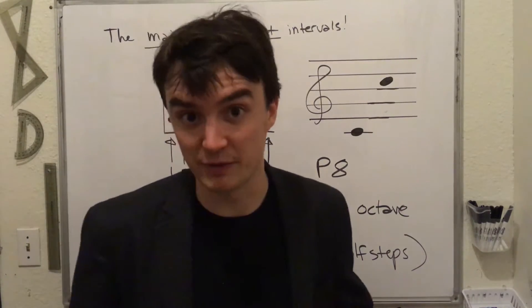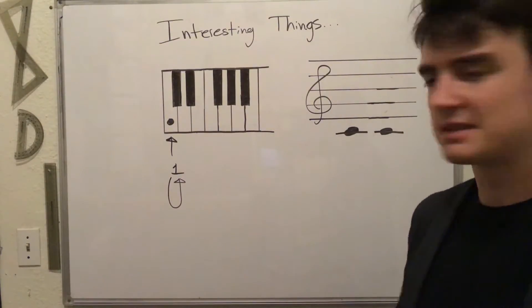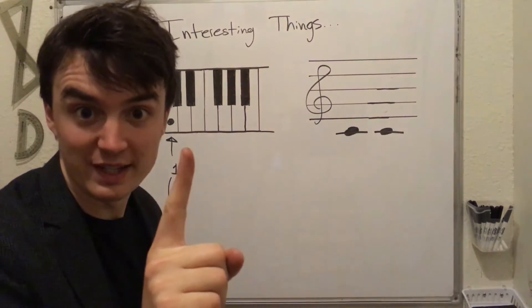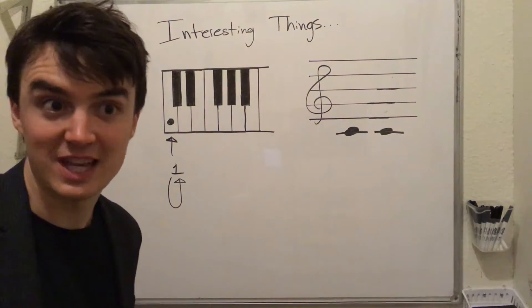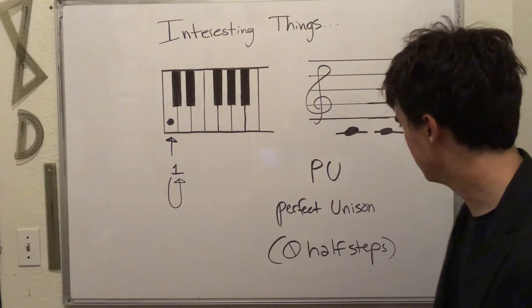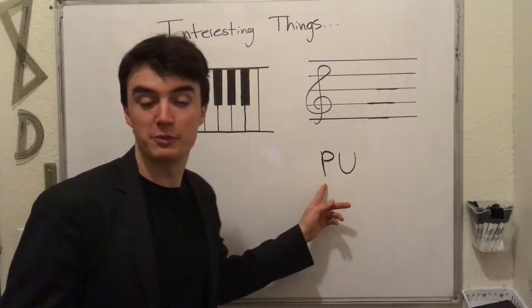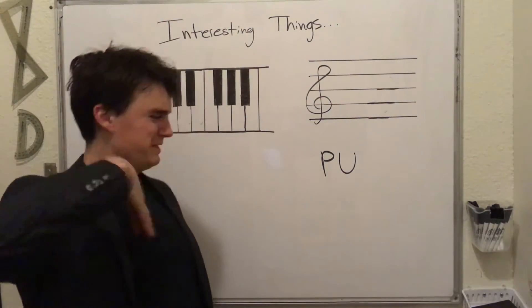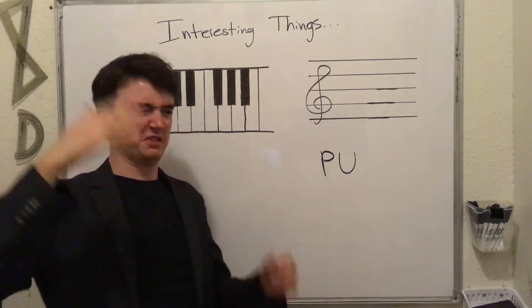That's all of the major and perfect intervals. Here's some interesting things. If you start on scale degree 1 and you end on scale degree 1, I know it doesn't make any sense, but it's called a perfect unison. It's abbreviated P-U. Smells something fierce.